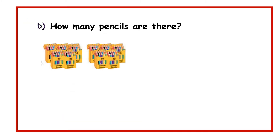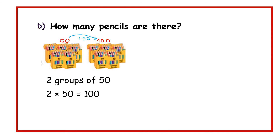In part B, we have got 2 groups, and each group has got 50 pencils. From 50 we go to 100 — that is 50 plus 50 equals 100. So 2 groups of 50 means 2 times 50, which is equal to 100. Note that 2 times 5 is equal to 10, and then we bring a 0 to come up with 100. So that is 100 pencils.